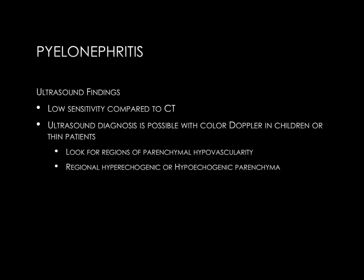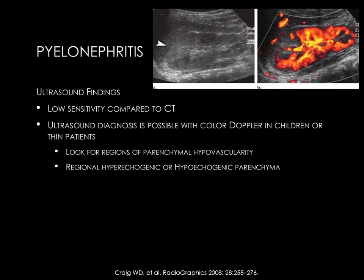The renal parenchyma itself may be either hyperechogenic or hypoechogenic in different patients. At the upper portion of the slide, you see two ultrasound images through the kidney. The left image with the arrowhead demonstrates slightly increased echogenicity of the upper pole of the kidney, which is by convention at the left side of the image. The right image is a power Doppler image, closely related to color Doppler imaging, and demonstrates hypovascularity of that affected portion of the kidney. This is a classic ultrasound appearance of pyelonephritis.